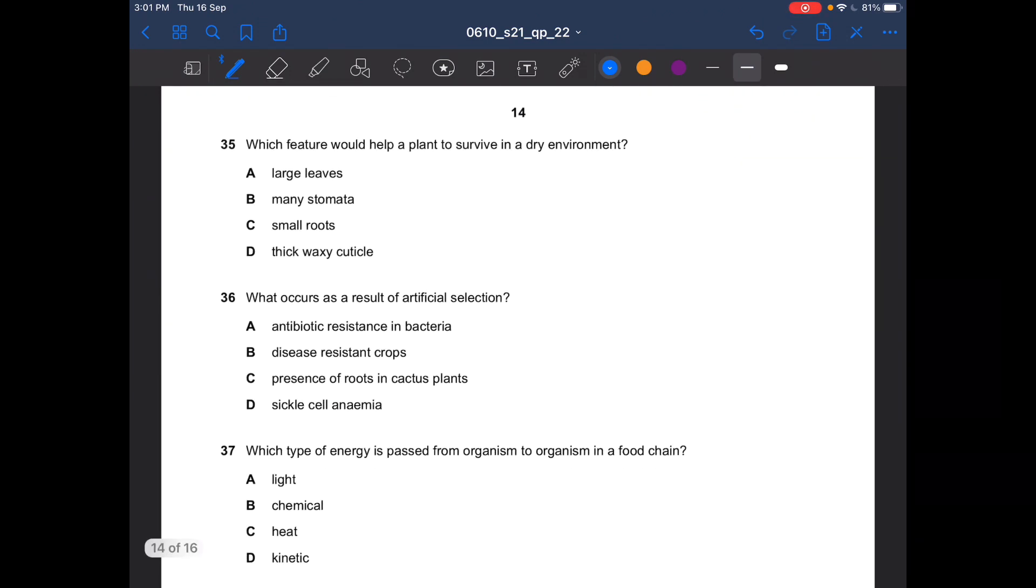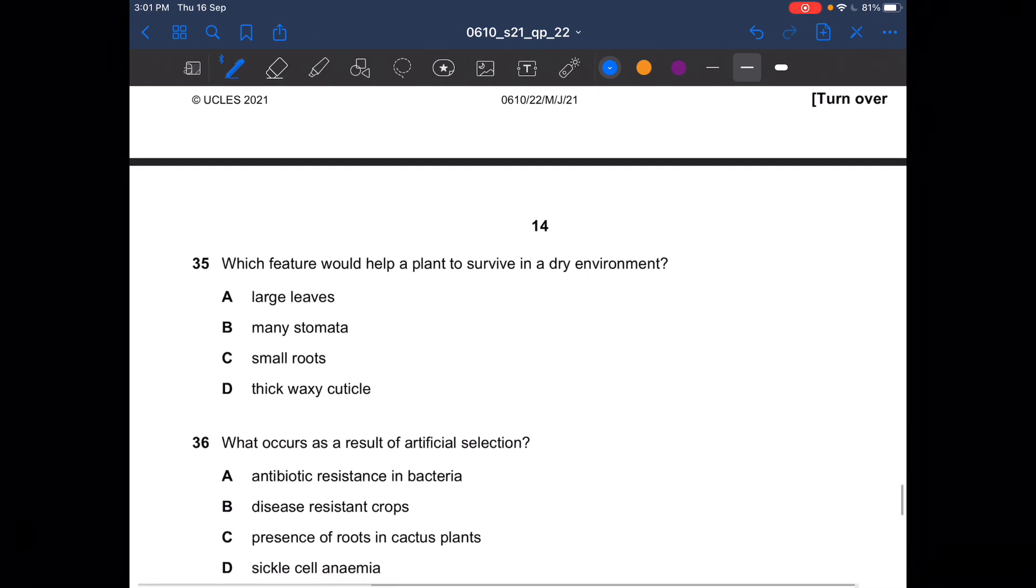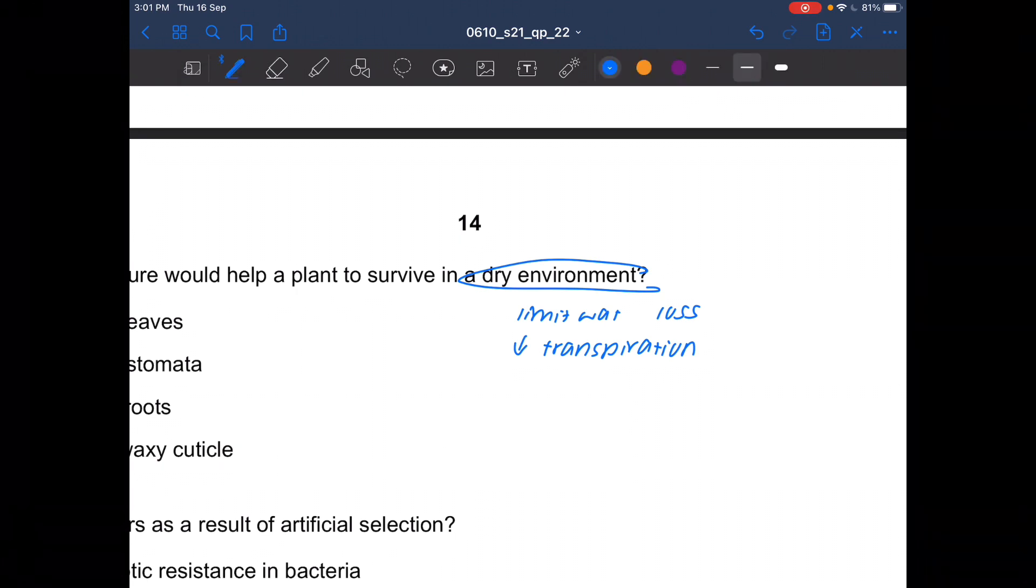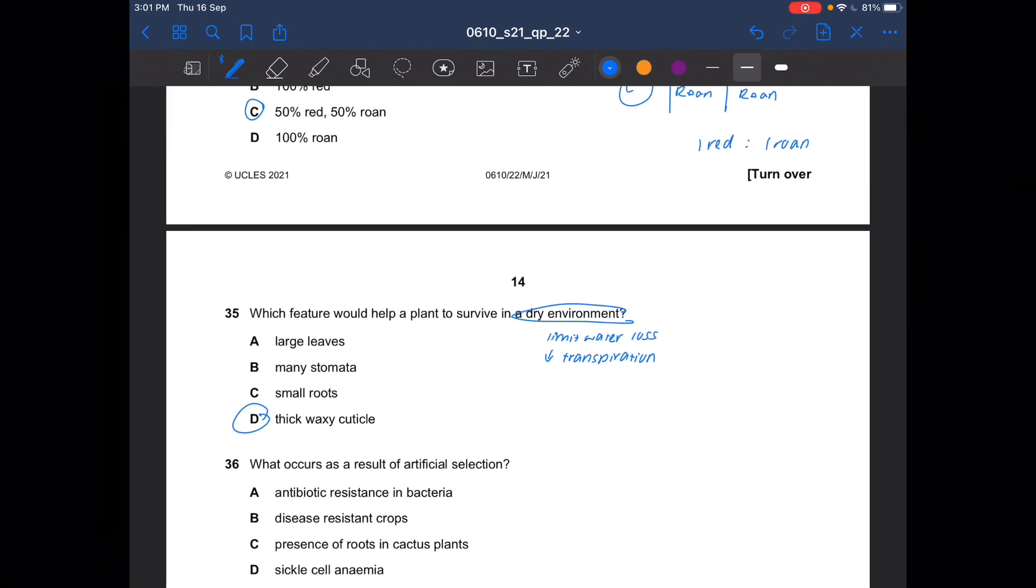Next question. Which feature would help a plant to survive in a dry environment? In a dry environment, you would want to limit water loss. So the answer is D. Cuticle would help limit water loss.